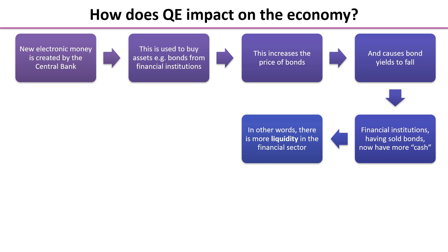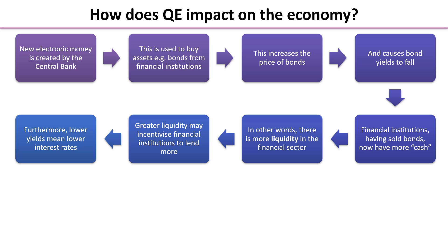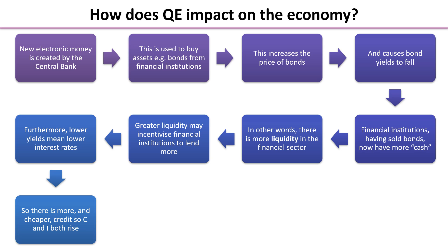So they've swapped these loans, these IOUs that might have five, six, seven, ten years to run, for cash. So greater liquidity. This means that they will want to lend more because they want this cash to work. Sitting on cash in their accounts is not earning them anything, so they'll want to lend more to start earning interest on those loans. Lower yields also mean lower interest rates, so there is more and cheaper credit.